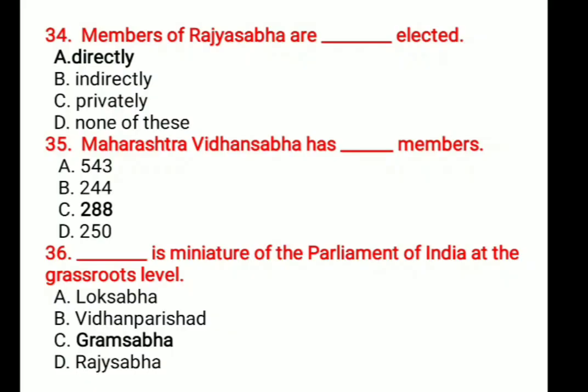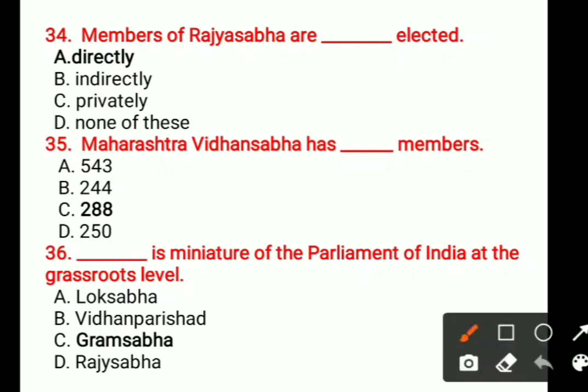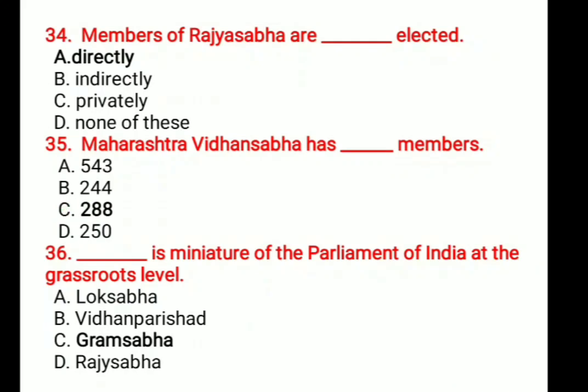Question number 35: Maharashtra Vidhan Sabha has blank members. Options are: A. 543, B. 244, C. 288, D. 250. The correct answer is 288.